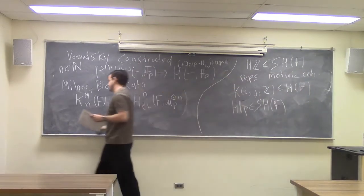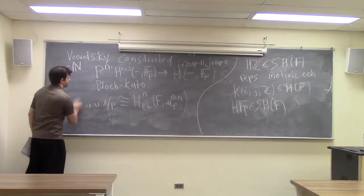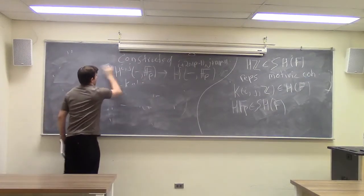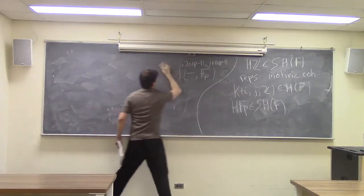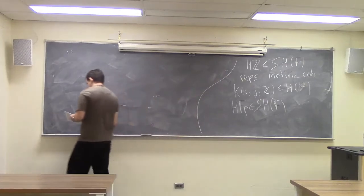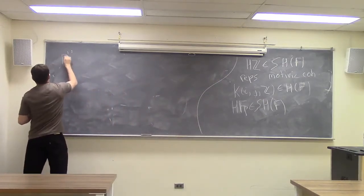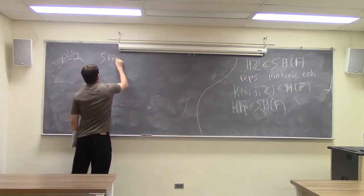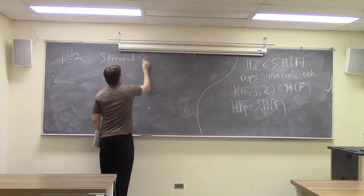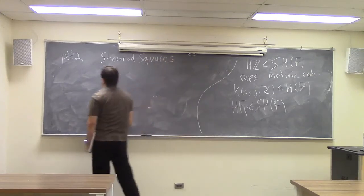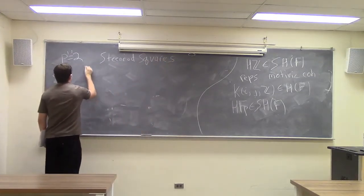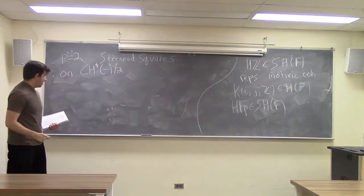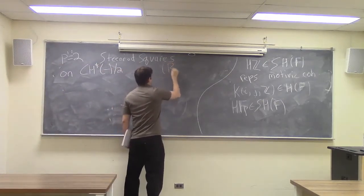So if you want to define Steenrod operations on Fp coefficients, it suffices to define what they do on the object representing motivic cohomology with Fp coefficients. Rather than getting into Voevodsky's full construction, I want to get into a simpler construction that you can do just for Chow groups, where you can see what's going on more clearly. This construction is given by Brosnan.